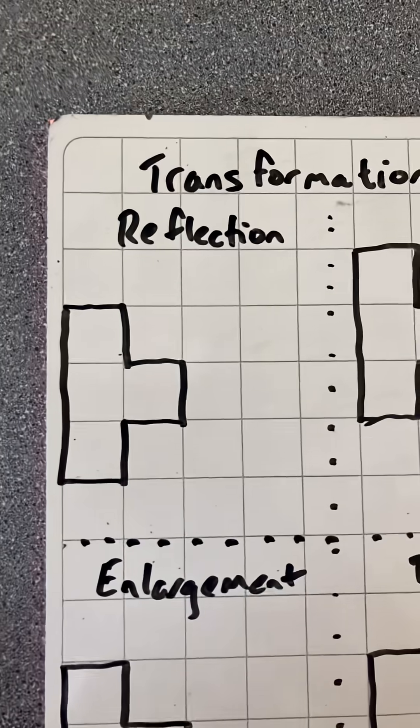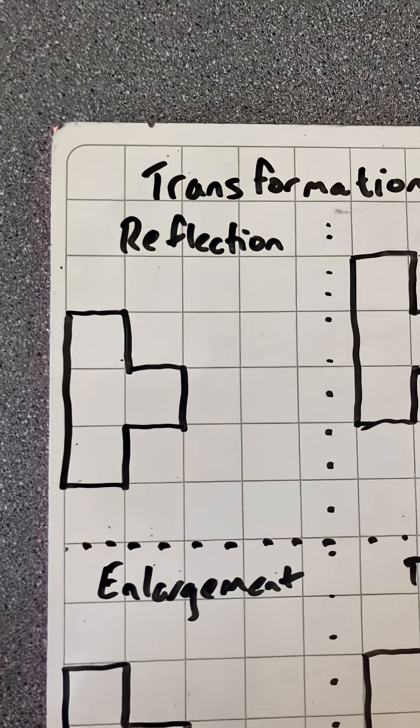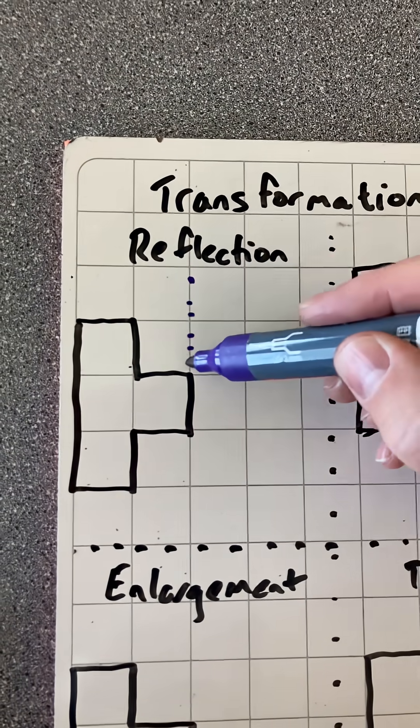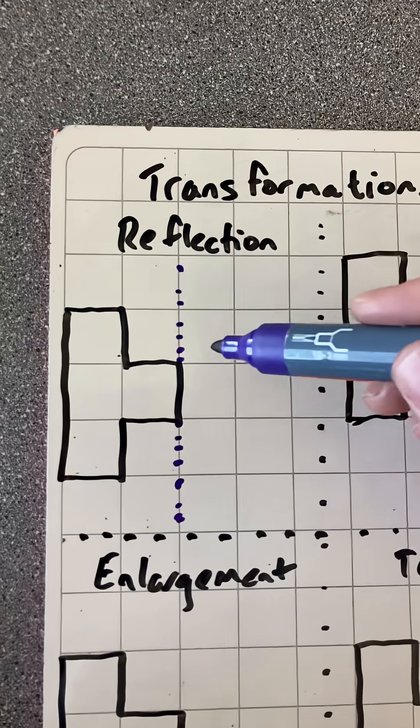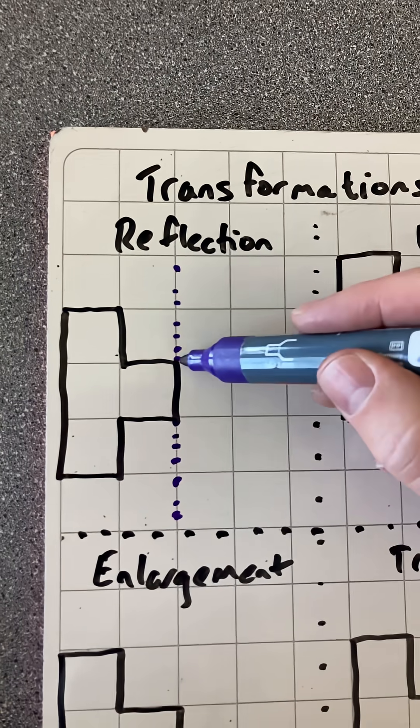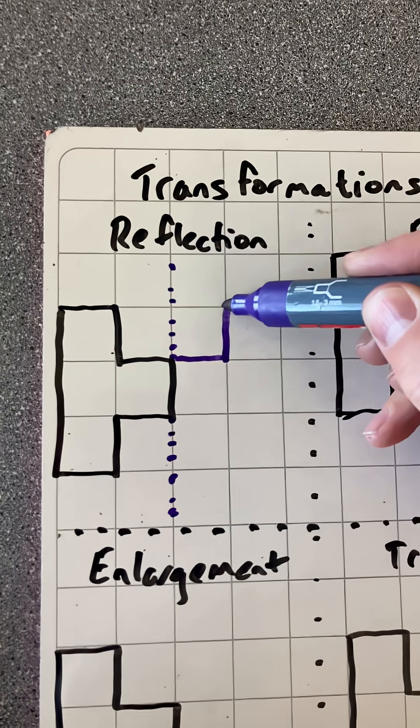Let's start with reflection. What you need here is to know where the mirror line is. If I draw the dotted line here, I'm then going to reflect the shape so it looks symmetrical the other side of this mirror line. And in this case, it's going to be touching that shape.